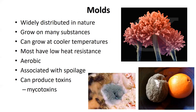Molds are ubiquitous in nature, and I'm sure everyone has seen these growing on food in their own home. Molds are a major cause of food spoilage because they have the ability to grow on many different substances and at room temperature as well as in your refrigerator. These are aerobic organisms, meaning they need oxygen to grow. A subset of molds can produce toxins as they grow in food, and these toxins could cause foodborne illness. These toxin-producing molds are typically associated with cereal crops and tree nuts.